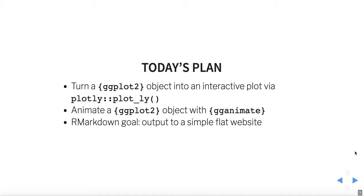Our plan for today is to do something basic. We're going to take ggplot2 objects that we've already learned how to make, and we're going to turn them into interactive plots and animated plots using two packages: the Plotly package and the ggAnimate package. Along the way, we're going to learn how to take our output and make it go to a simple, flat website. In the course of just one hour, we're going to animate our plots, make them interactive, and make a website just for kicks.